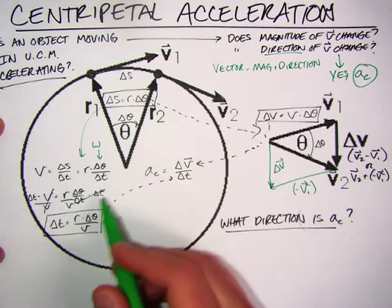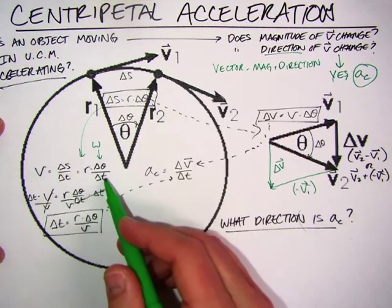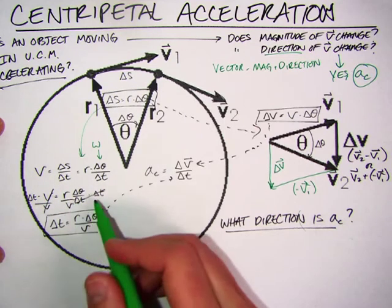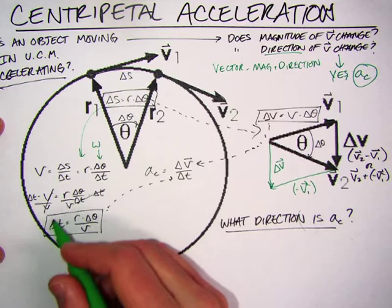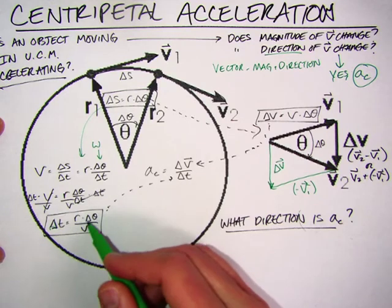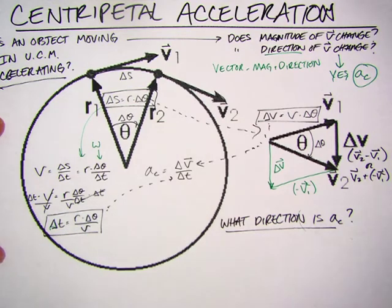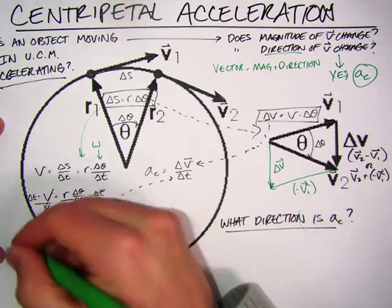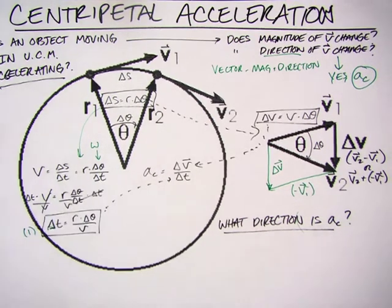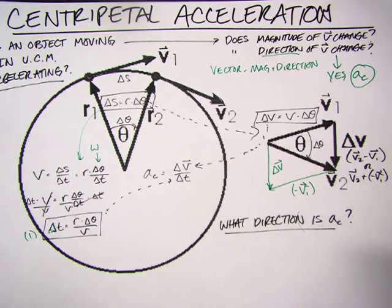So we get this relationship. Now I'm going to rewrite this in terms of delta T. So I do a little algebra maneuvering here, and I get an expression for delta T in terms of R delta theta and that angular speed. So this is the first equation we need, so jot that down if you haven't already.